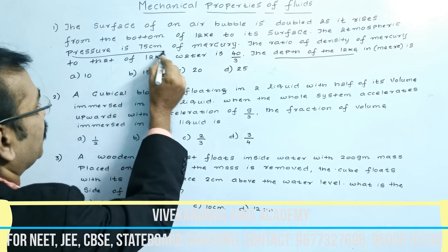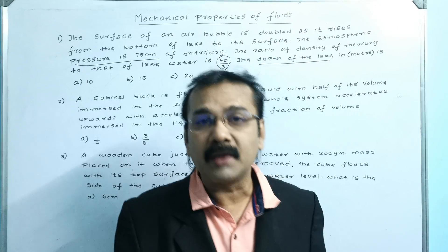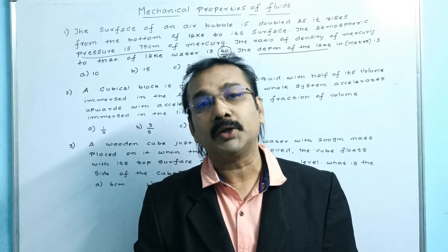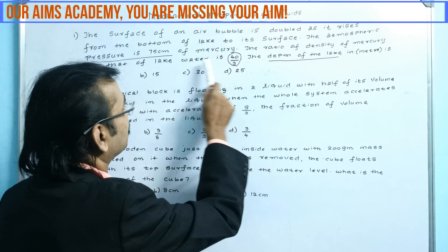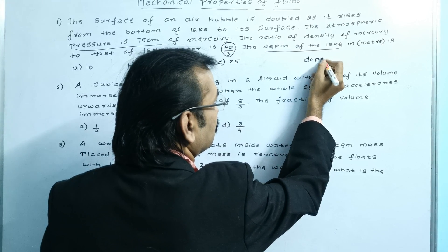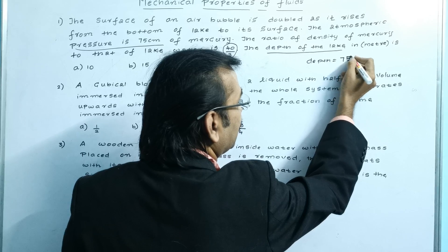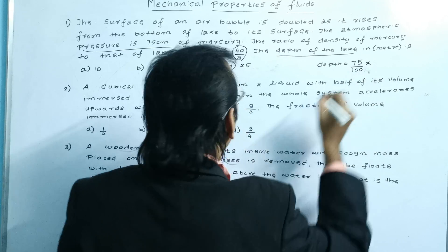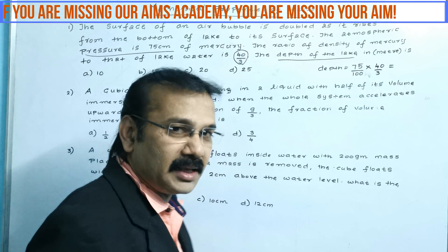Without using any formula and without using any concept, please take your pen and tell me what are the two numbers you are having. Yes, you are right - it is 75 cm and 40 by 3. Write down this: 75 cm which has to be converted into meter, that is 75 by 100.